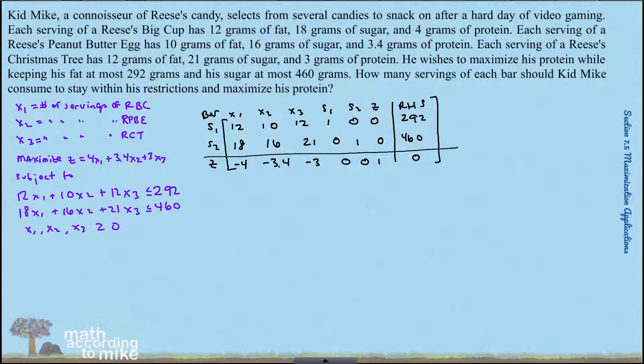All right, most negative number is the negative four, and the smallest ratio is—I'm scrolling in my notes because I want to do this in my head—smallest ratio would be the 292 over 12, so that 12 is your pivot element. Oops, let me circle that.